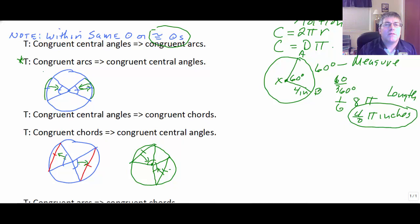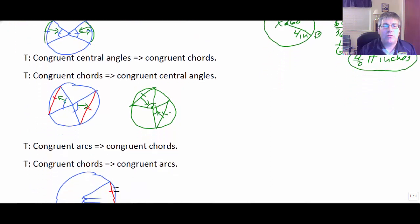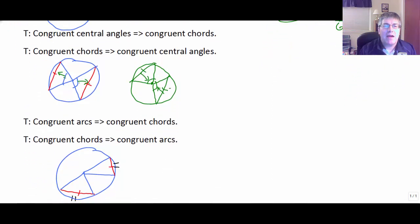So what's missing? Congruent central angles imply congruent arcs. Congruent central angles imply congruent chords. So maybe we can eliminate the central angles and work with the chords and the arcs. And if you guessed that was the case, you are correct. If we have congruent arcs, then our chords must be congruent.